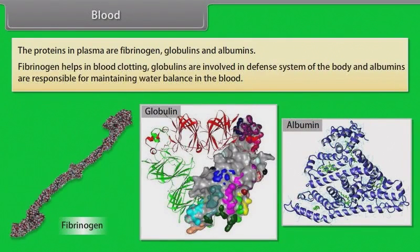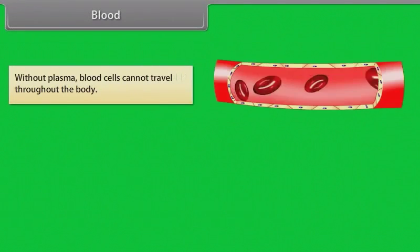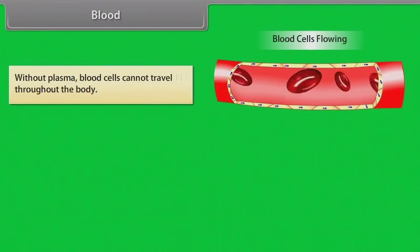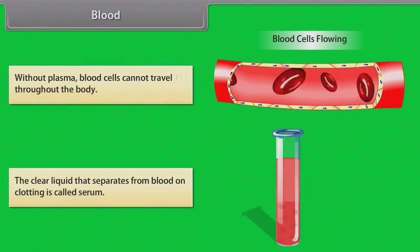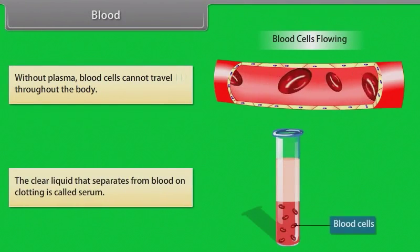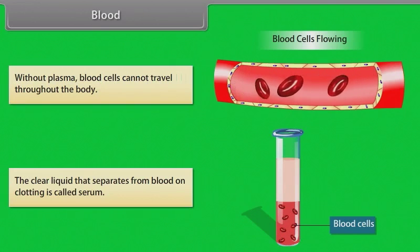Fibrinogen helps in blood clotting. Globulins are involved in the defense system of the body. Albumins are responsible for maintaining water balance in the blood. Without plasma, blood cells cannot travel throughout the body. The clear liquid that separates from blood on clotting is called serum.